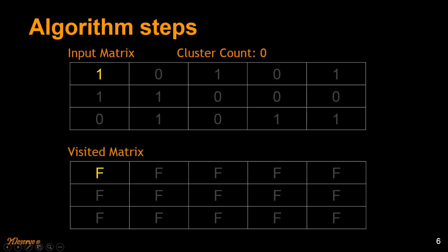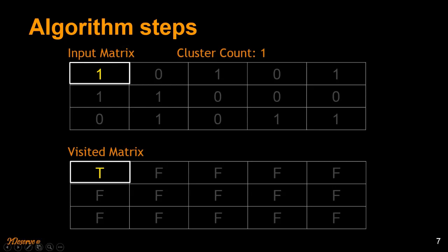That's when we increment the cluster count and mark the value as true. We are visiting the first element in the matrix which has value 1 and hasn't been visited before. So we mark it as true and increment the cluster count. As soon as we visit such an element we start doing a depth first search.